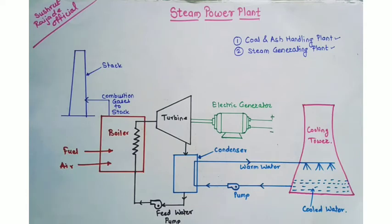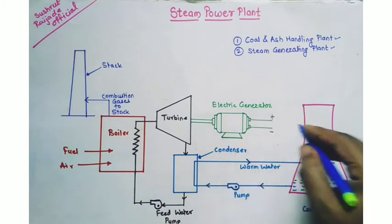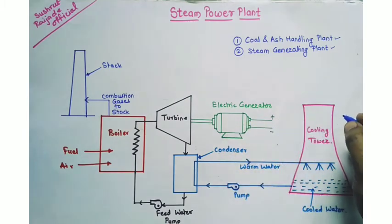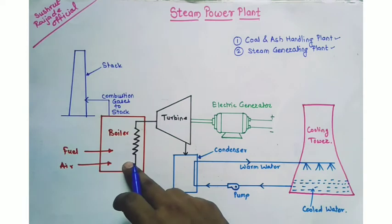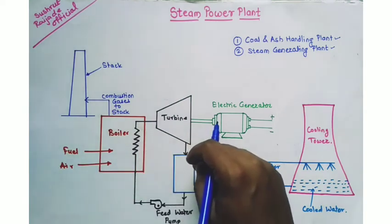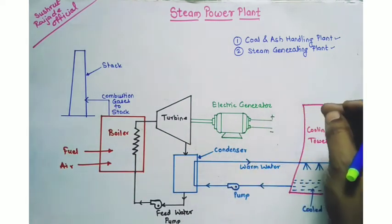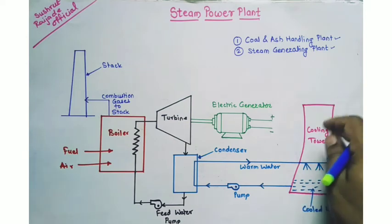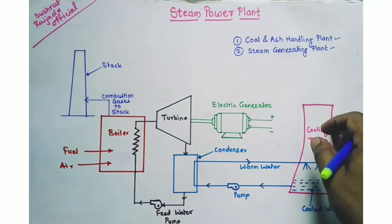A generating station which converts the heat energy of coal combustion into electrical energy is known as a steam power station. It can also be called a thermal power station or a thermal power generating plant.